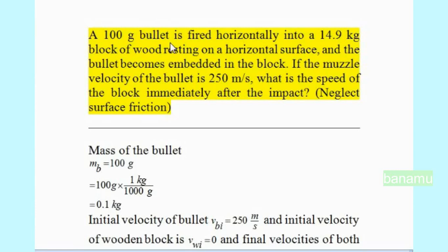A 100 gram bullet is fired horizontally into a 14.9 kg block of wood resting on a horizontal surface and the bullet becomes embedded in the block. If the muzzle velocity of the bullet is 250 meter per second, what is the speed of the block immediately after the impact? Neglecting surface friction.